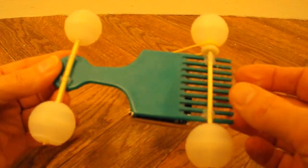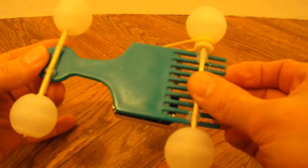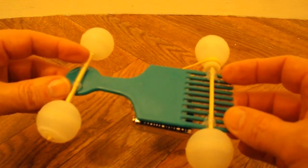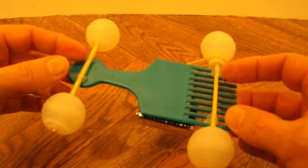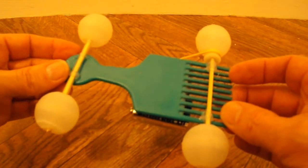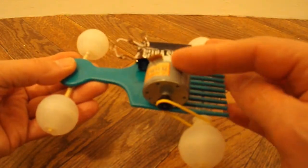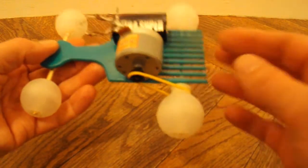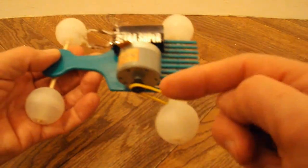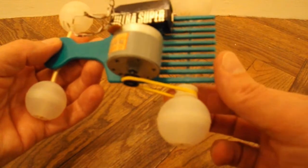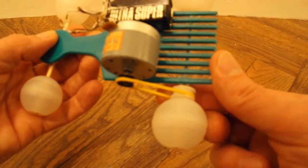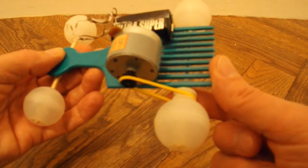The axles are barbecue skewers. We've got some plastic tubing for the axles to go in. The motor comes out of an old cassette player. And it had a pulley on it already. And there's a pulley there that came out of a printer.